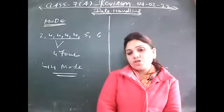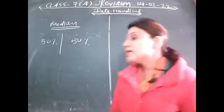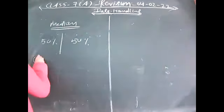Median is that value which divides the data into two equal parts — 50 percent of observations lie above it and 50 percent lie below it. To find the median, the first step that students usually miss — and because of that their whole answer goes wrong — is that first of all you have to arrange the data in ascending order.